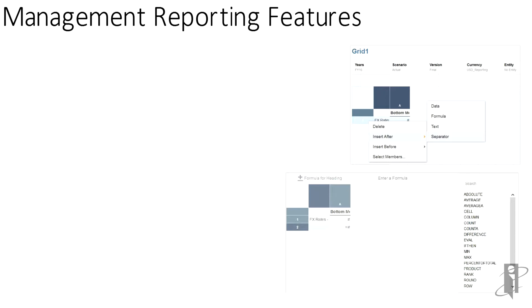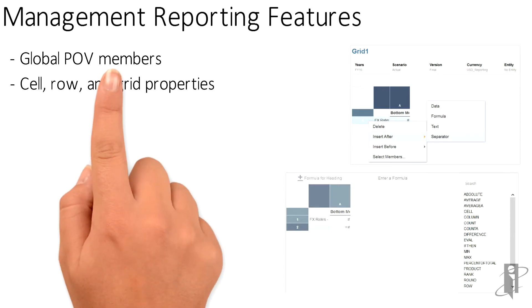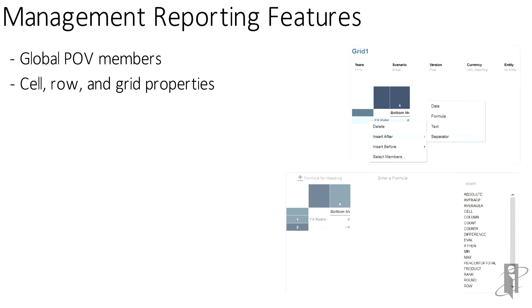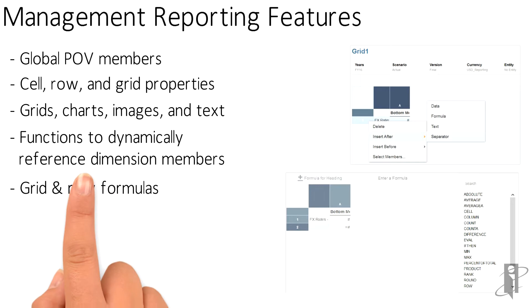Some of the reporting features may be similar to the tool called Financial Reporting that you can use in many other EPM tools. Some of the features that come with this technology right now include the ability to use global POV members. There are also cell, row, and grid properties. You have the ability to insert grids, charts, images, and text, very similar to Financial Reporting. There are also functions that dynamically reference dimension members.